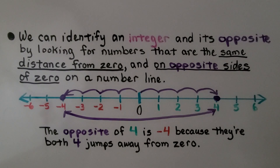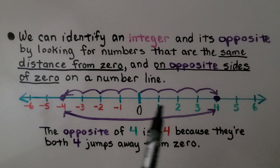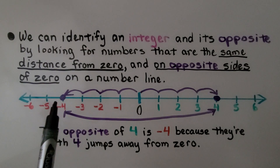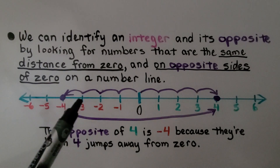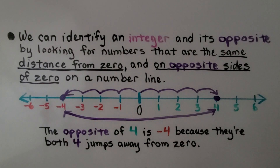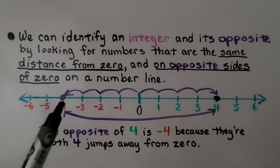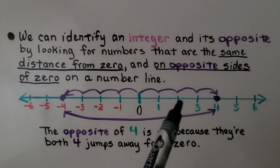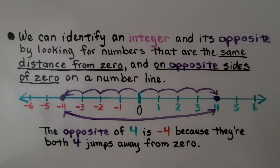We can identify an integer and its opposite by looking for numbers that are the same distance from zero and on opposite sides of zero on a number line. The opposite of four is negative four because they're both four jumps away from zero. The opposite of positive four is negative four, and the opposite of negative two is positive two — they're both two jumps away from zero.